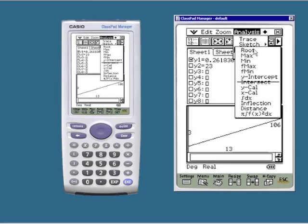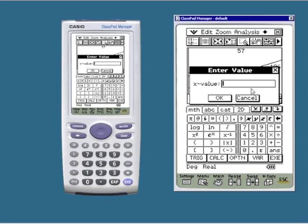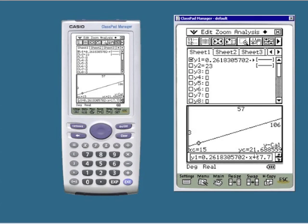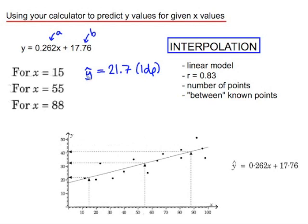If I go analysis, g solve, y cal, put in an x value of 15, the calculator returns a value of 21.7 to one decimal place. And notice that we call this y hat, because this wasn't one of our original y values. This is a predicted y value.